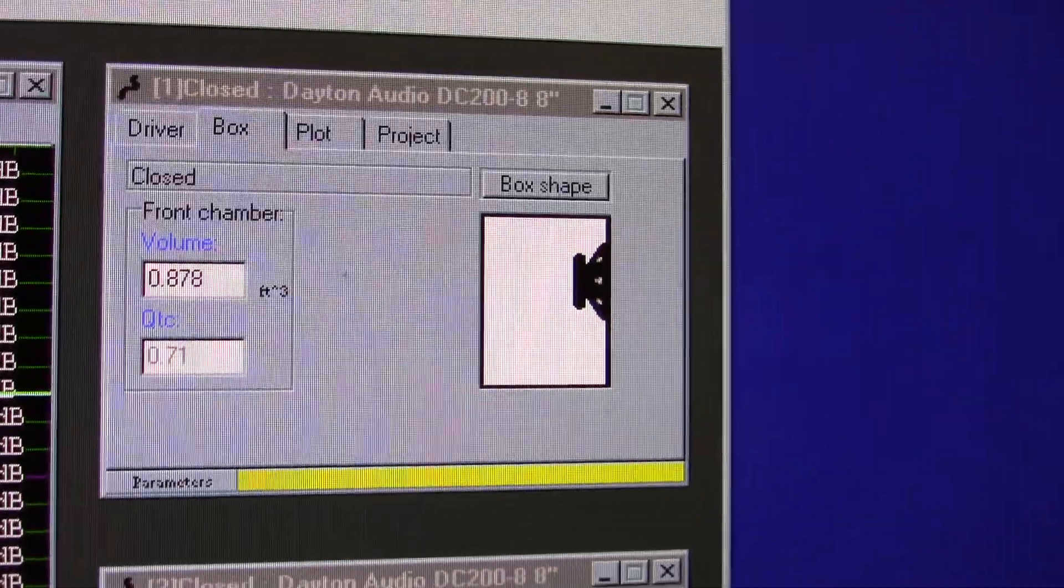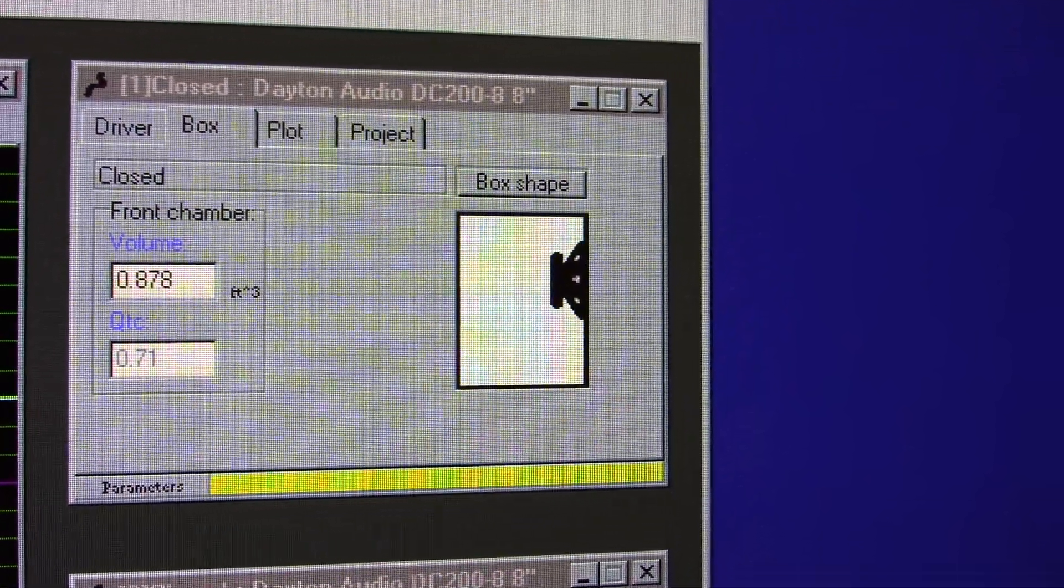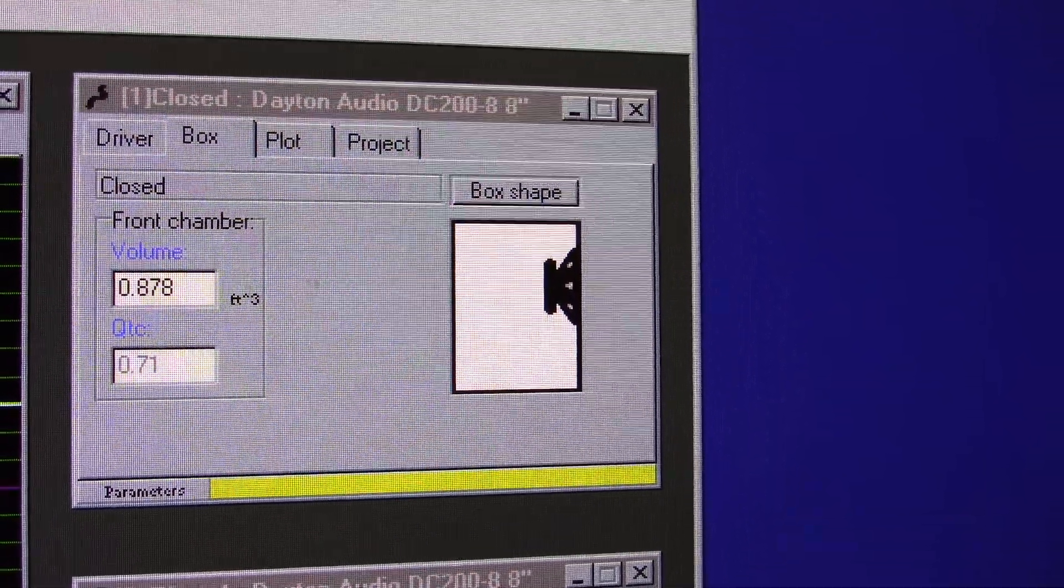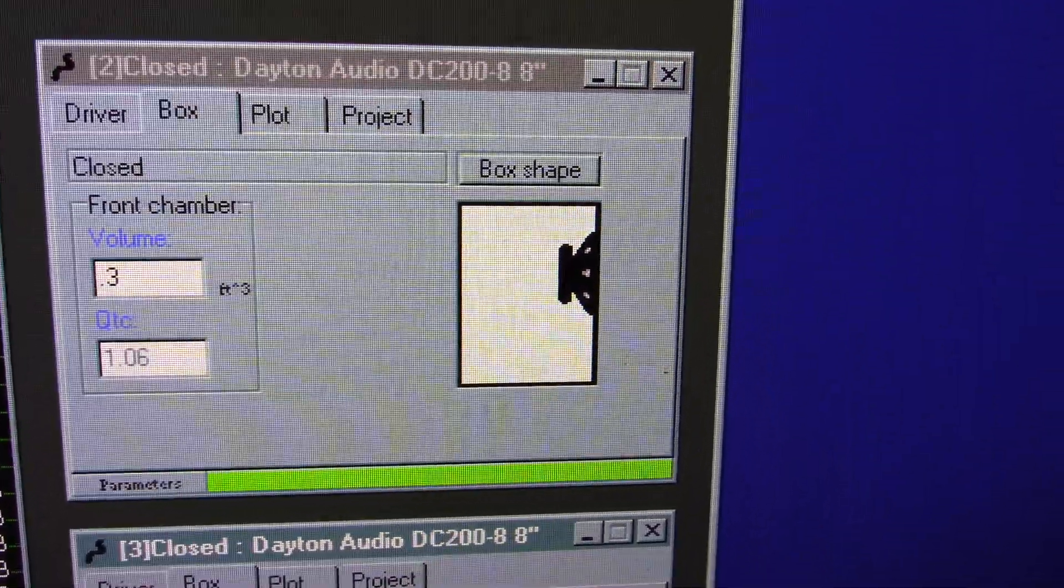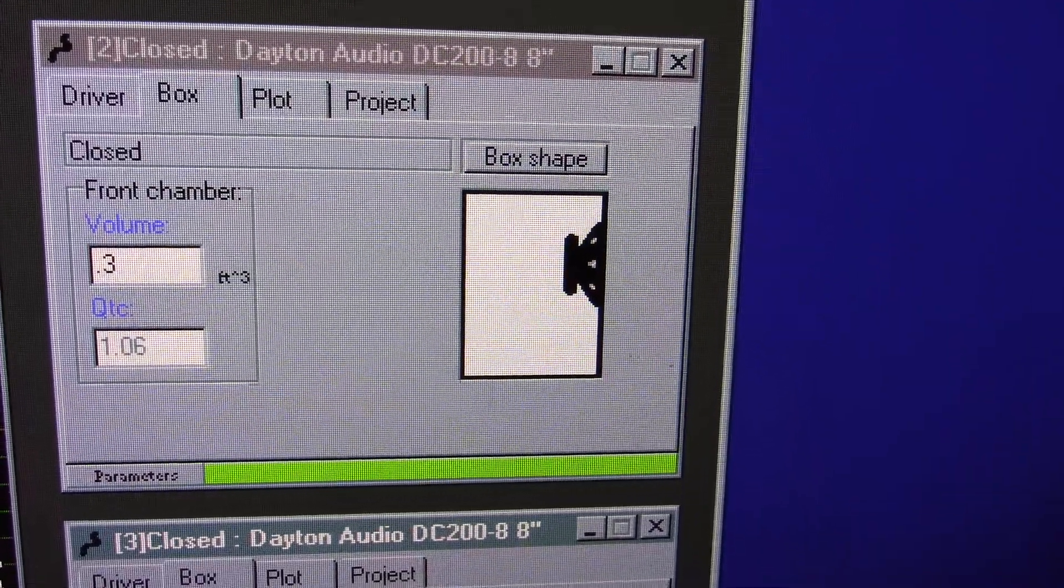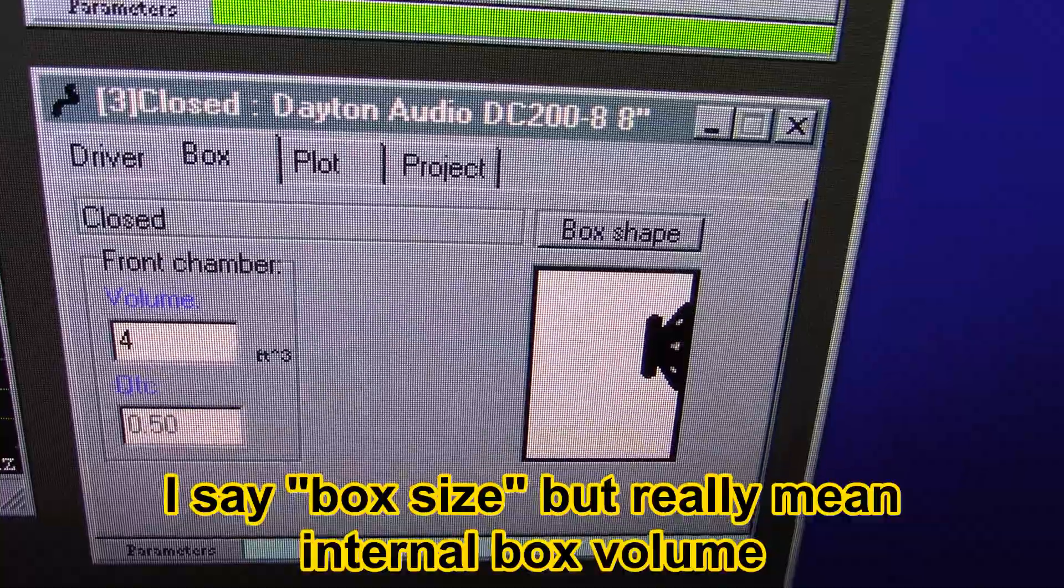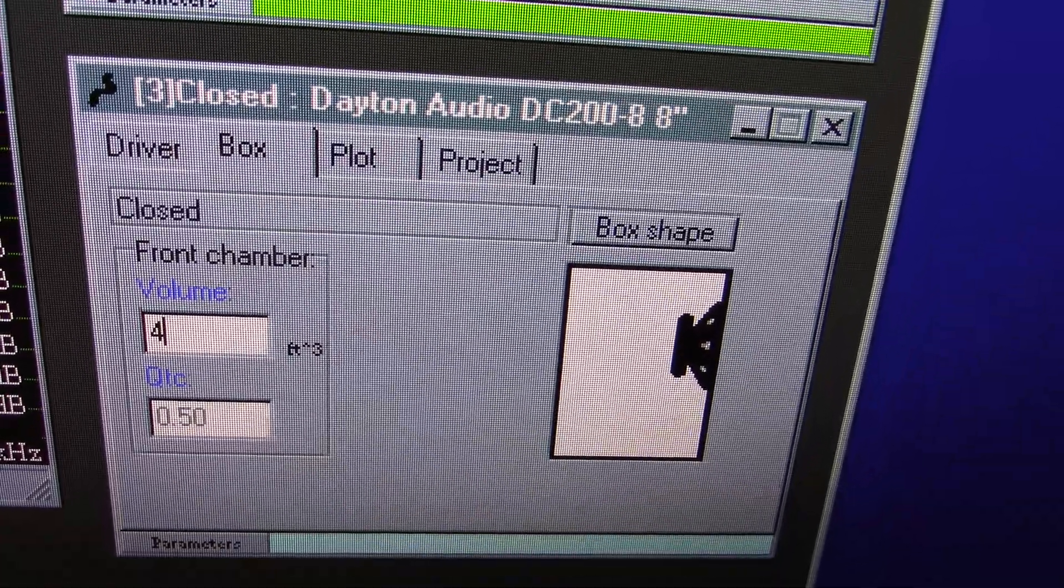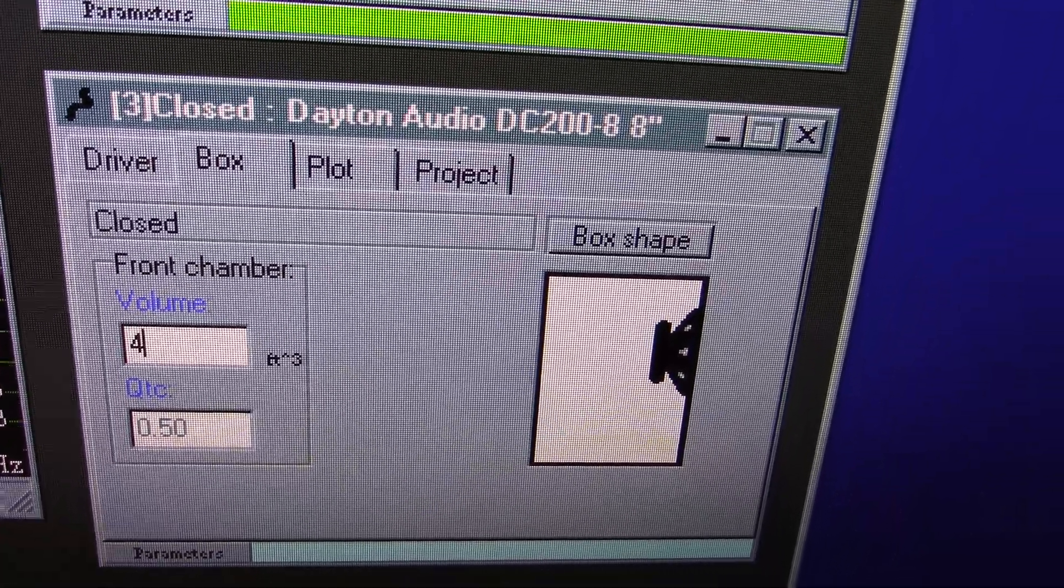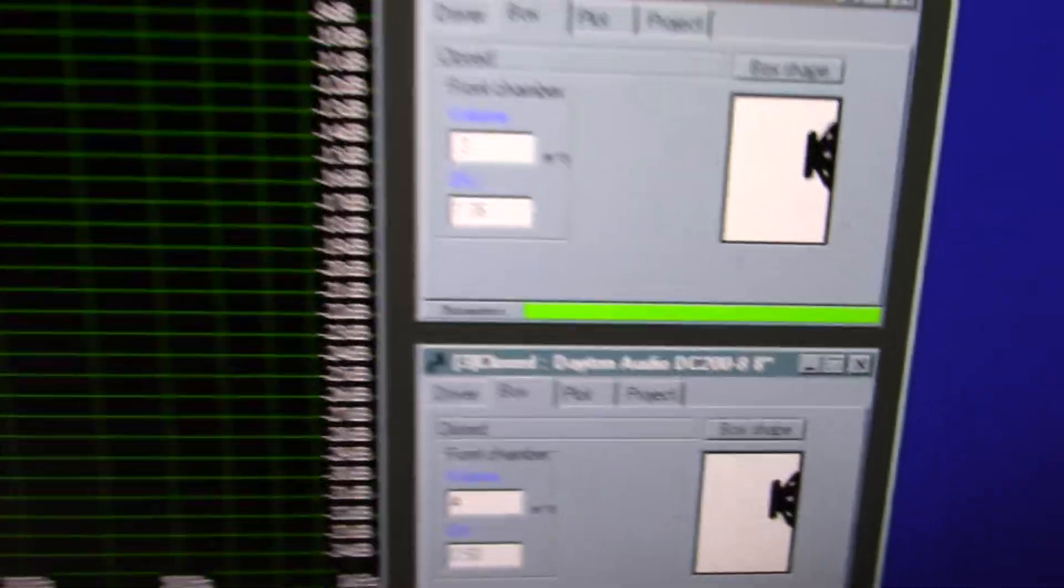They're all sealed, just to see the response curves here. So, we have the software's default, with the QTC at 0.71. And with that, we need a box around 0.87 cubic feet. And I adjusted for a smaller box size of 0.3 cubic feet, to see what a QTC of 1 would look like. And conversely, a much larger box size, for a QTC of 0.5. And with this driver, to get down that low, I need 4 cubic feet.